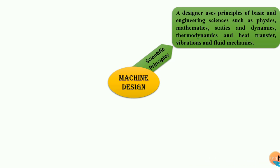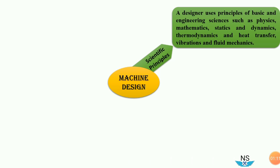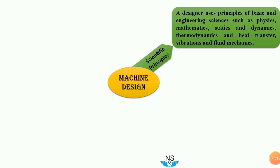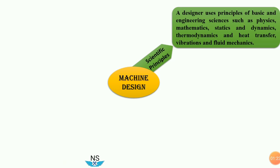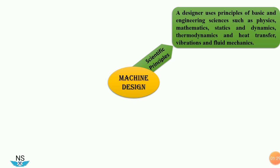Some of the examples of scientific principles are Newton's laws of motion, then the first law of thermodynamics, second law of thermodynamics, third law of thermodynamics, then laws of vibrations, then Newton's law of viscosity. These are some scientific principles of basic and engineering sciences.